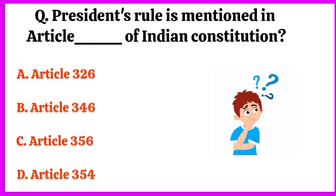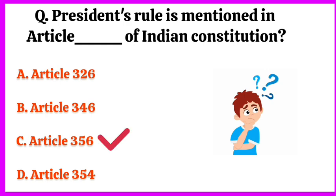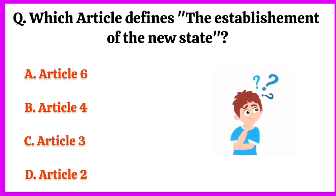President's rule is mentioned in which article of the Indian Constitution? The correct answer is option C: Article 356. Which article defines the establishment of a new state? The correct answer is option D: Article 2.